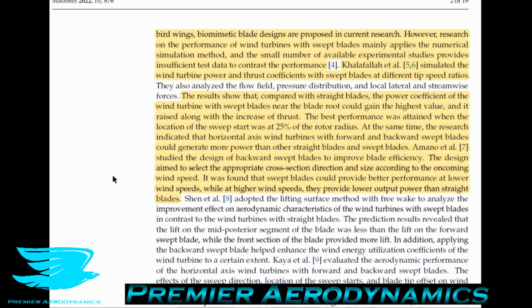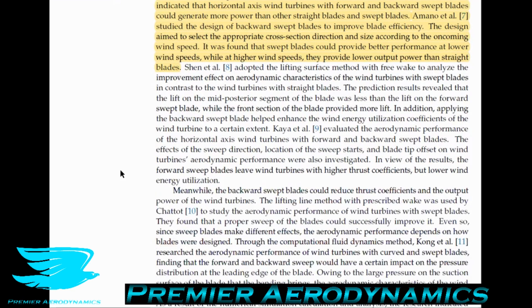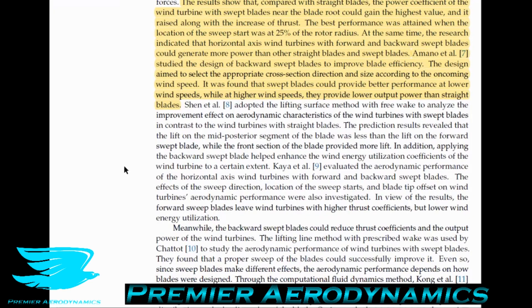That's good because they're looking at low wind speed regimes — if you can generate more power in this region, that's what we want. Swept backwards means the tip is further downstream compared to the root; if it's forward swept, the tip is further upstream than the root.